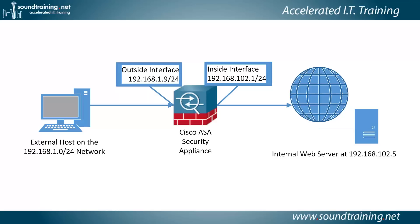The external host is connected to the outside interface on the ASA security appliance, and then you'll have an internal web server connected to the inside interface. We'll connect by using the outside interface's address, which will be forwarded via static NAT to the internal web server.